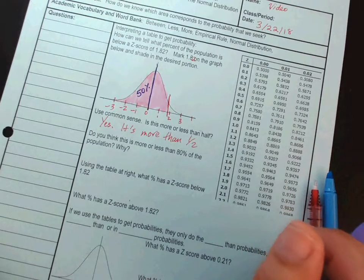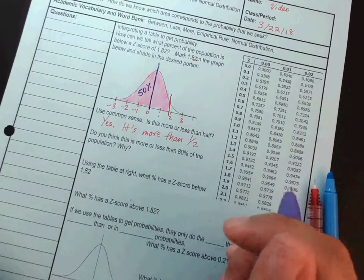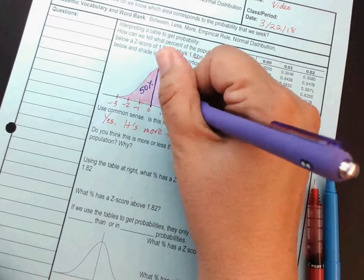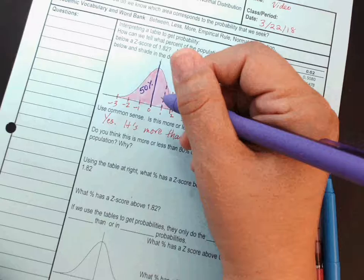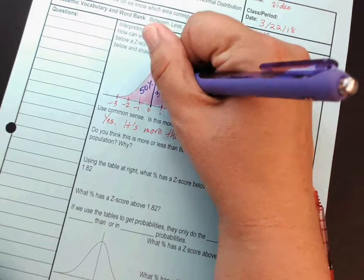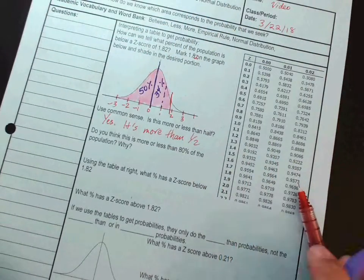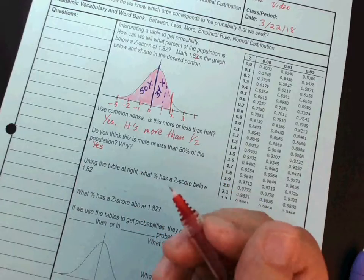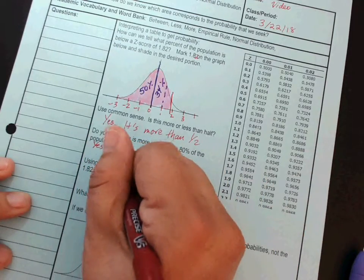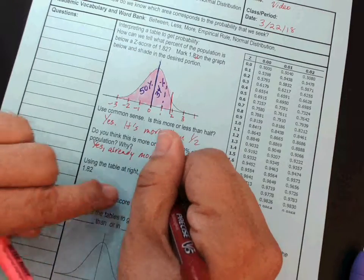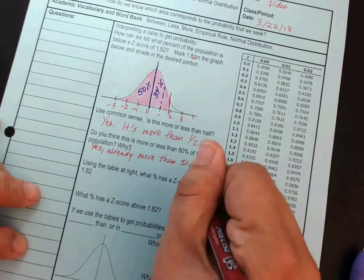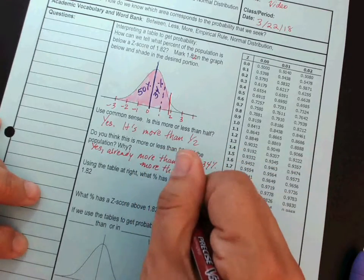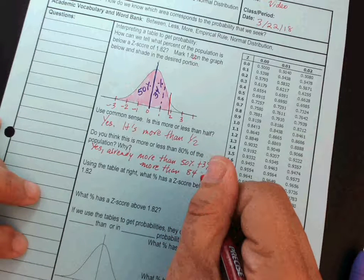Now, here's a question. Do you think that this is more or less than 80% of the population, and why? Well, I'm not quite sure, but guess what? I do have another mark here, and I do know how big this slice is supposed to be. This is 34%. So, yes, I do think that it's more than 80%. Why? Because it's already more than 50% plus 34%, which means it's more than 84%. It's actually pretty high.